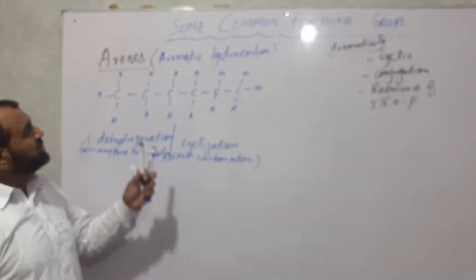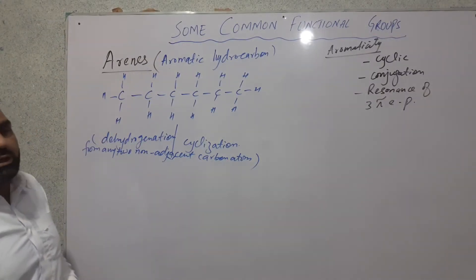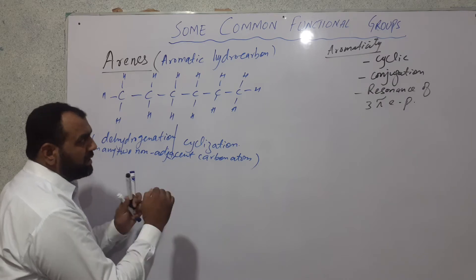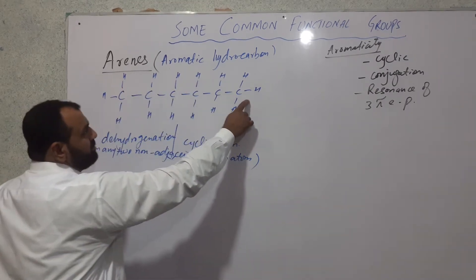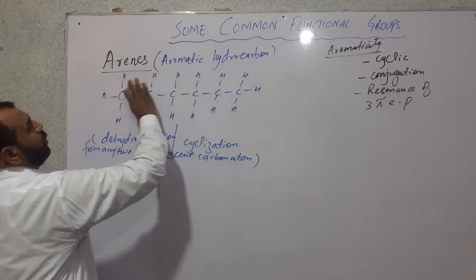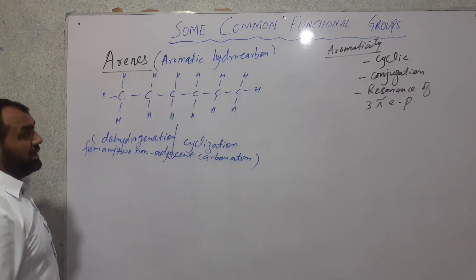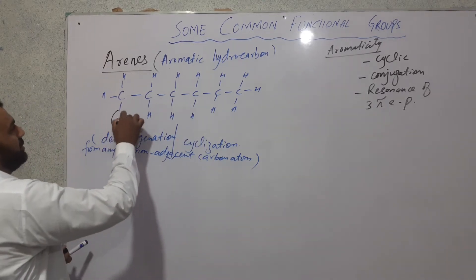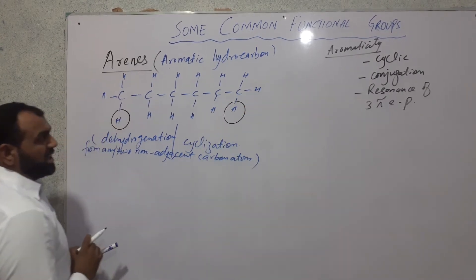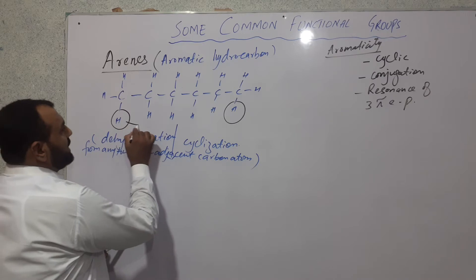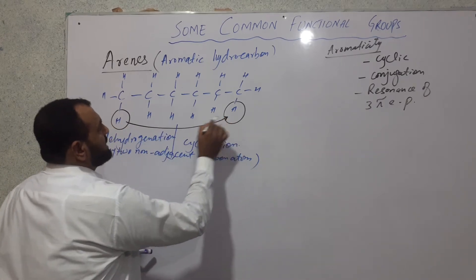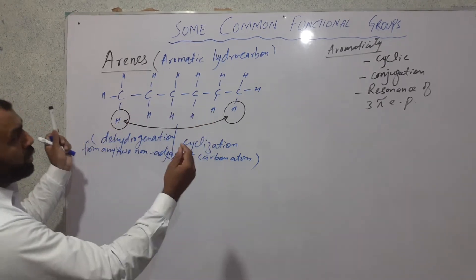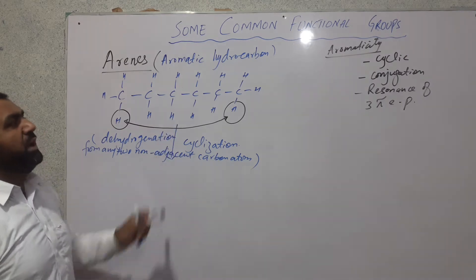Dehydrogenation from any two non-adjacent carbon atoms gives rise to unsaturation in a saturated compound. Non-adjacent carbon atoms like carbon one and six, one and five, one and four, one and three — these are all non-adjacent. When you remove hydrogen from non-adjacent carbon atoms, if you remove hydrogen from carbon one and six, then carbon one and carbon six will link together, making the compound cyclic.